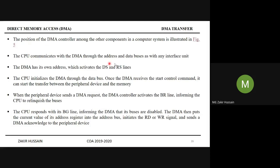Point number one under DMA transfer: the CPU communicates with the DMA via the address and data buses, as with any interface unit. Every I/O device has an interface unit, and through it the CPU communicates via the I/O bus. Likewise, the CPU communicates with the DMA through the address and data buses. The DMA has its own address which activates the DMA select and register select lines.